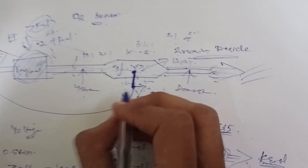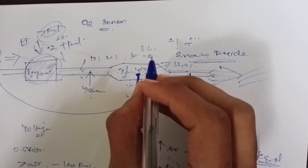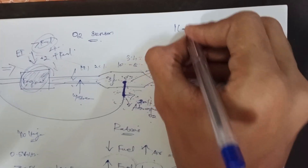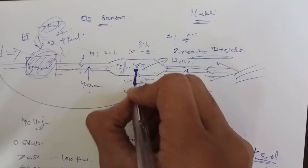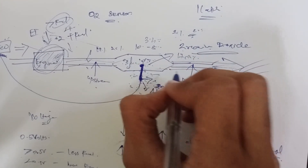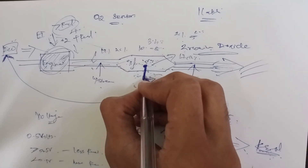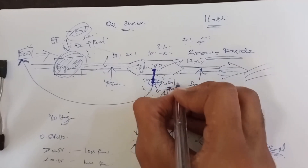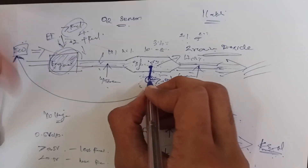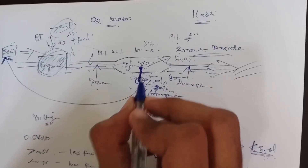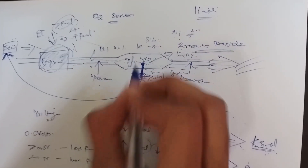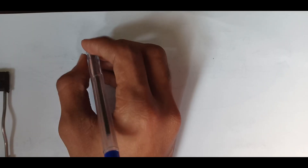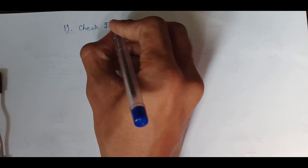Now, how do you maintain the O2 sensor? There is often doubt about whether there is an O2 sensor problem. If you have any problems, how do you identify them? First symptom: check engine light. Second symptom: misfire.